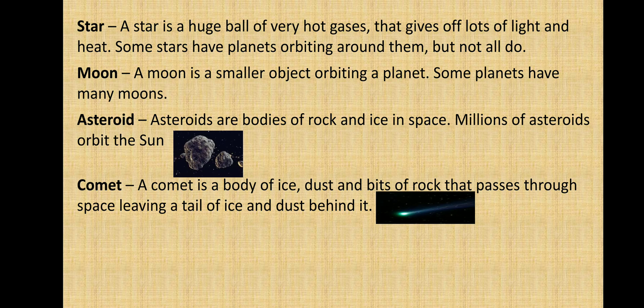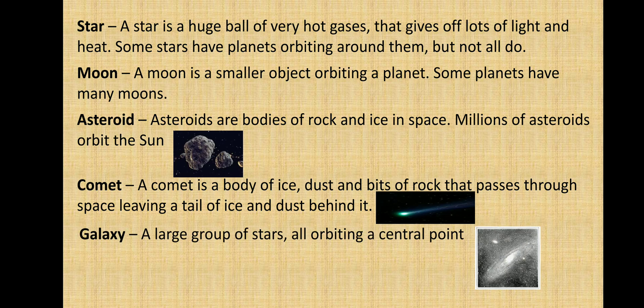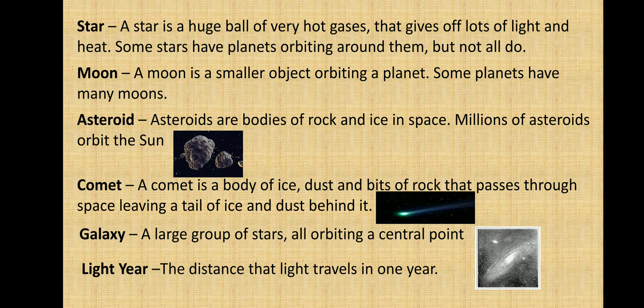A comet is a body of ice, dust, and bits of rock that passes through space, leaving a tail of ice and dust behind it. The shining object you see is a body of ice with dust and bits of rock, and the line trailing behind it is a tail of ice. Next, a galaxy is a large group of stars all orbiting a central point.